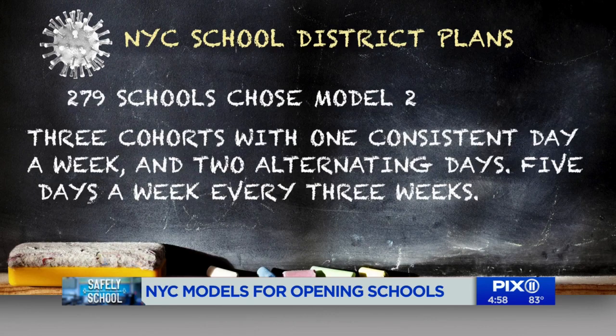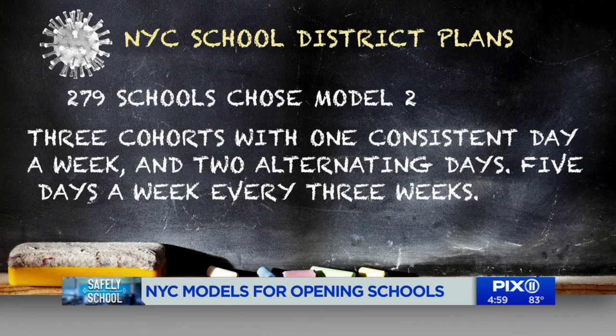279 schools chose Model 2, which divides the school population into three cohorts or groups, each with one day a week and two alternating days. Every three weeks, one of those groups will have a five-day school week.